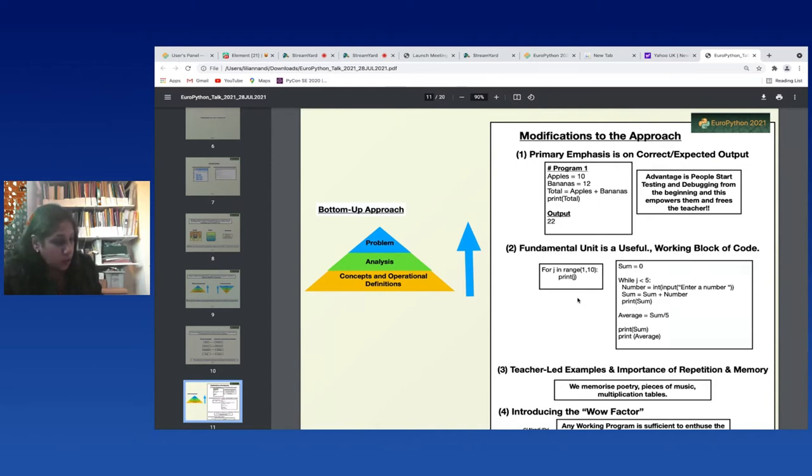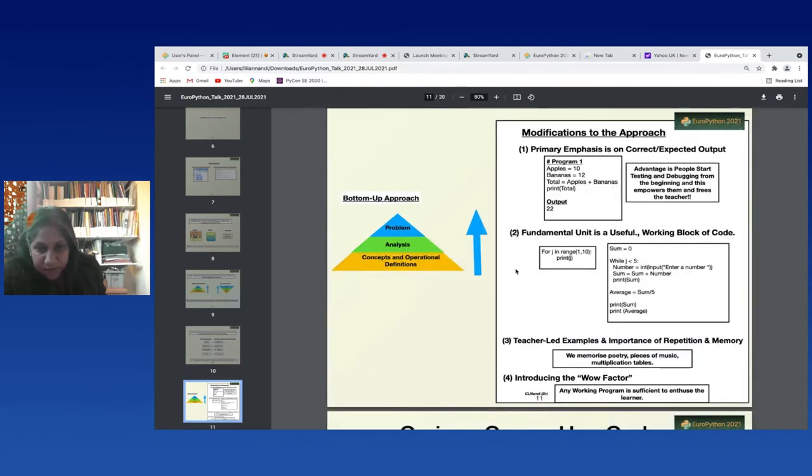Now the second modification is that we think in terms of small units of code or in terms of working structures of code. So the fundamental building block is a unit of useful, portable code. The students of course understand the code, its logic and its structure and the output, and they can pull out these pieces of code when necessary. So if we look here: for j in range 1 to 10 print j, printing out the first nine numbers, is a useful bit of code, portable code that they can put into other programs. The second bit here is a while statement where they input five numbers, they calculate the sum total and the average. This is also an important bit of code which they can import into other programs as well.